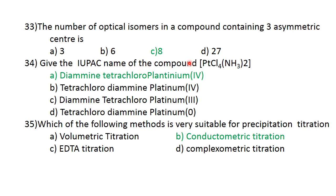Give the IUPAC name of the compound: platinum, Cl4, NH3 twice. If you have a compound with negative ligand, then neutral diamine, platinum-4. Diamine, tetrachloro, platinum-4. Option A is correct. Ligands in alphabetical order: diamine, tetrachloro, platinum-4 is the correct answer. Which method is very suitable for precipitation titration? Conductometric titration is a very suitable method.